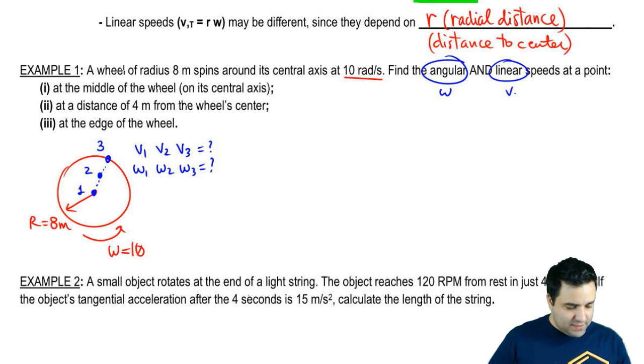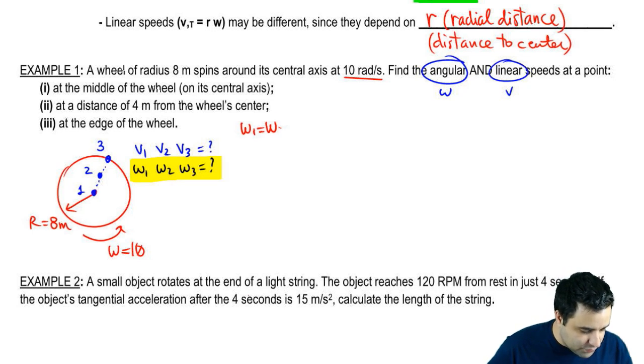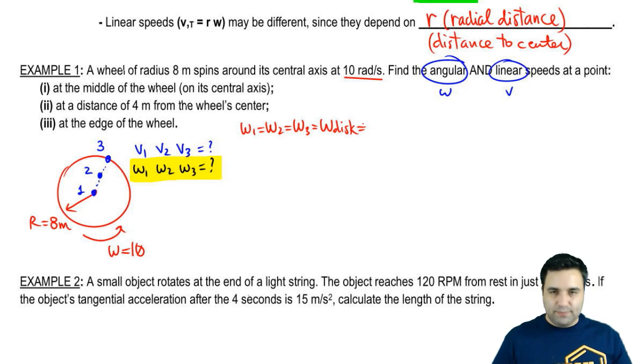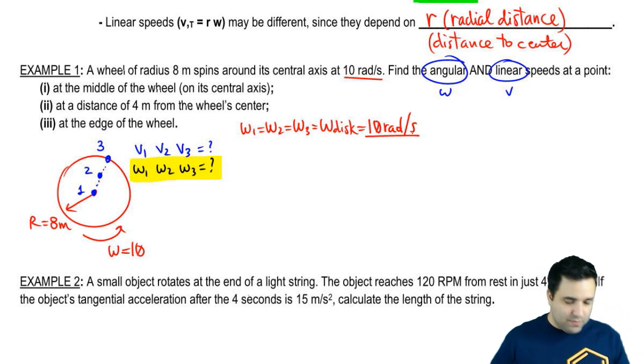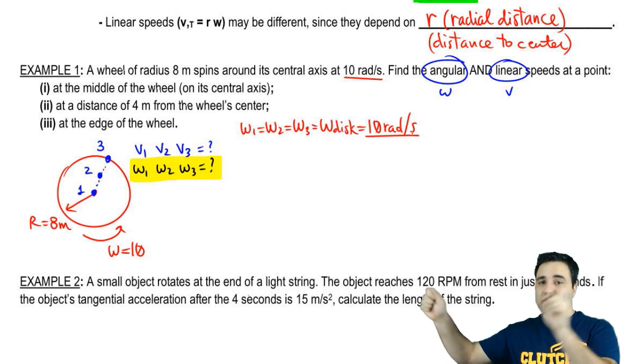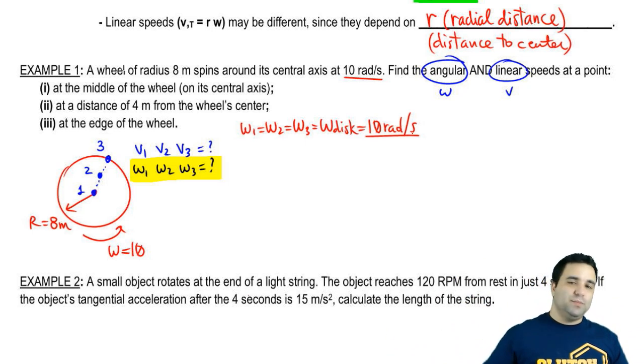So first thing is to realize that all these points have the same, because they're all on the same disk, they have the same omega, and that omega is the same omega as the disk. So that's the first part. Omega 1 equals omega 2, which equals omega 3, which equals omega disk. So this is more of a conceptual to know if you know that. So all of these would be 10 radians per second. So please remember, all of them are the same, and they are the same as the disk. If you're on top of a disk, you're spinning with the disk, you have the same omega.